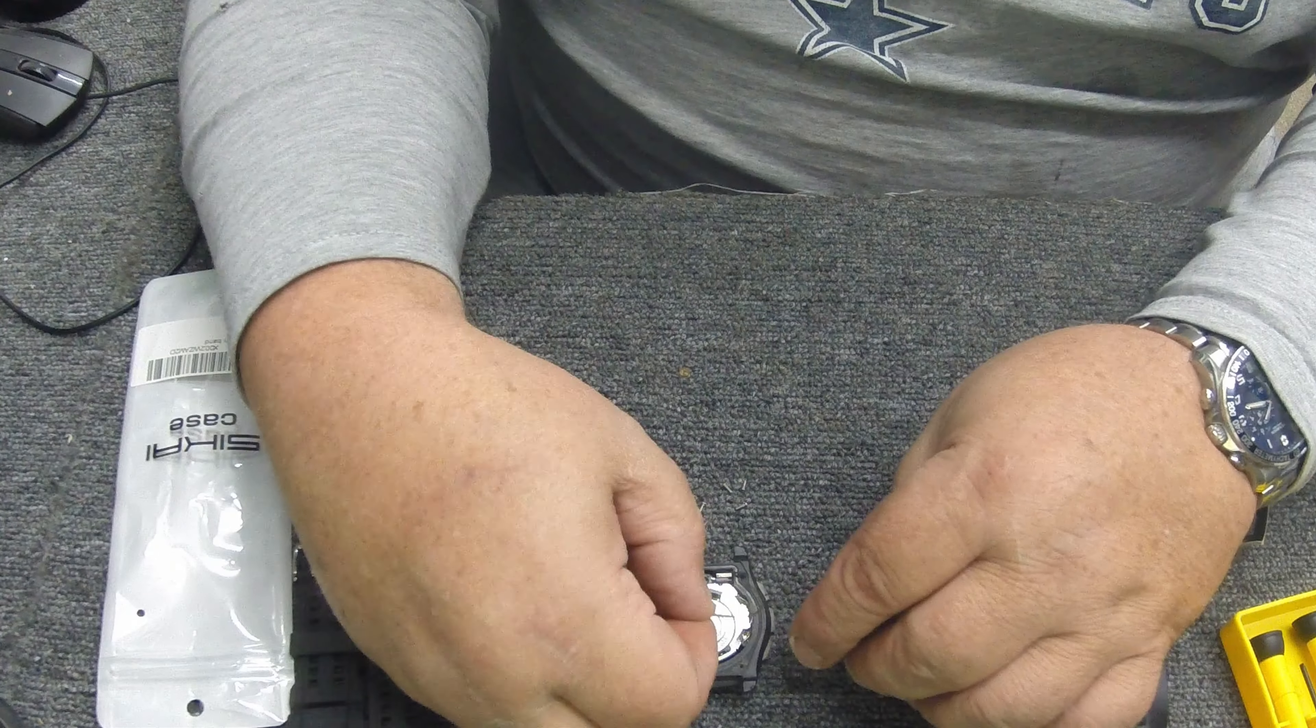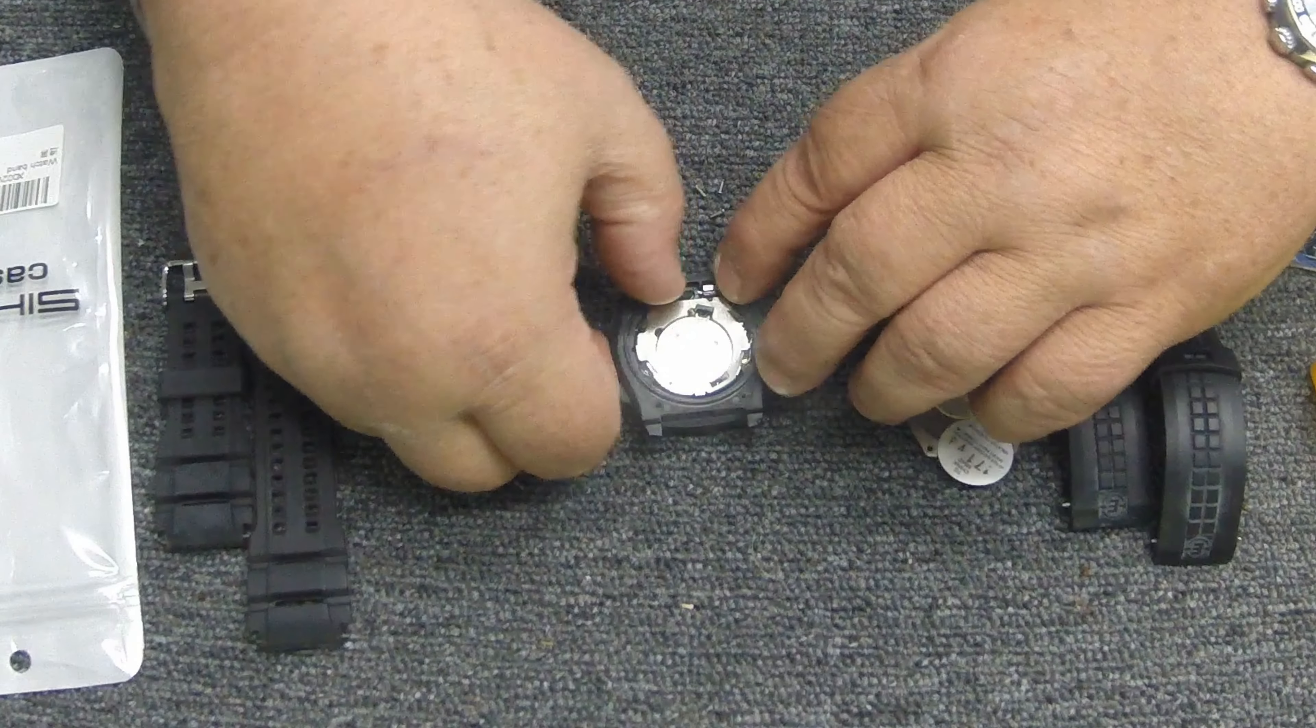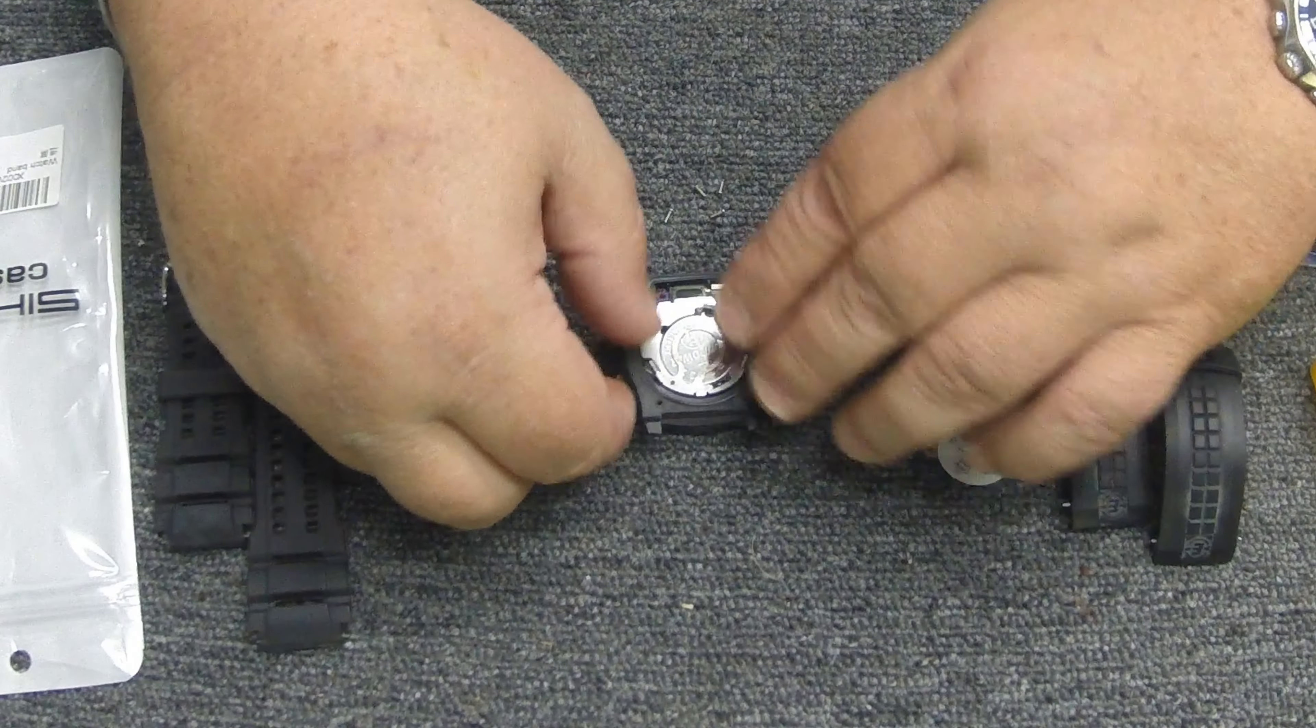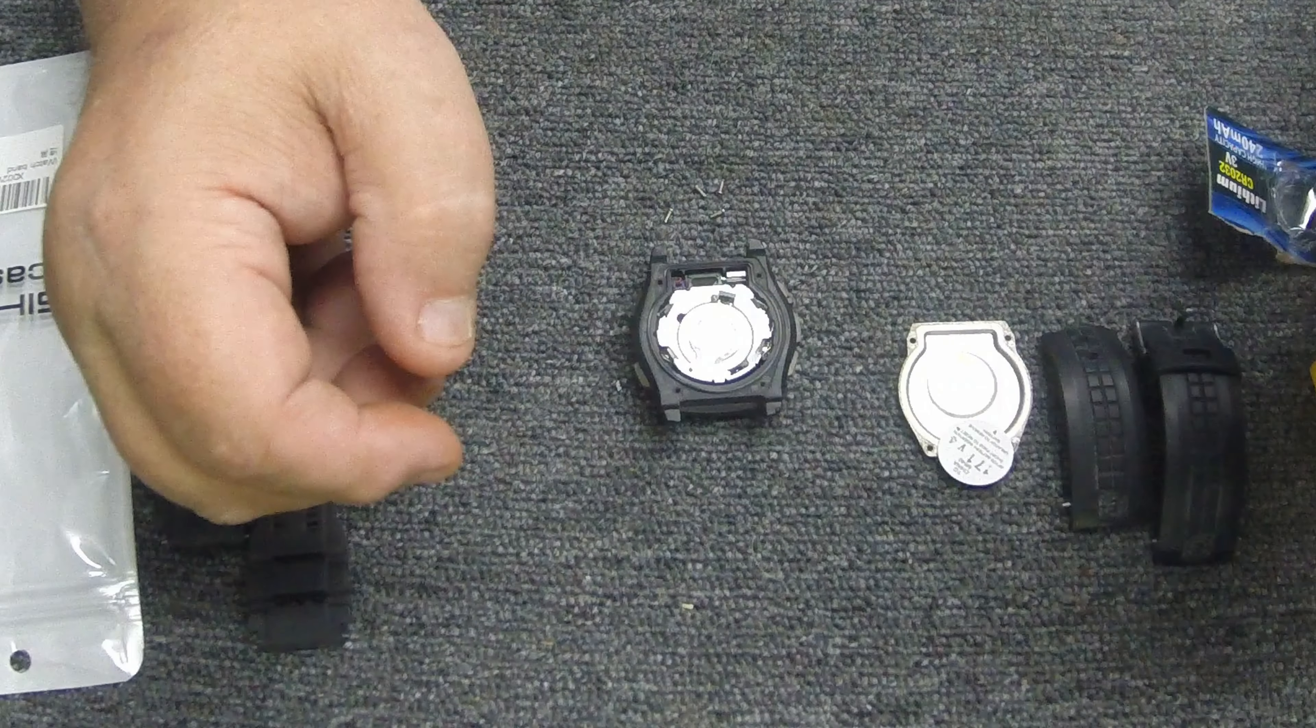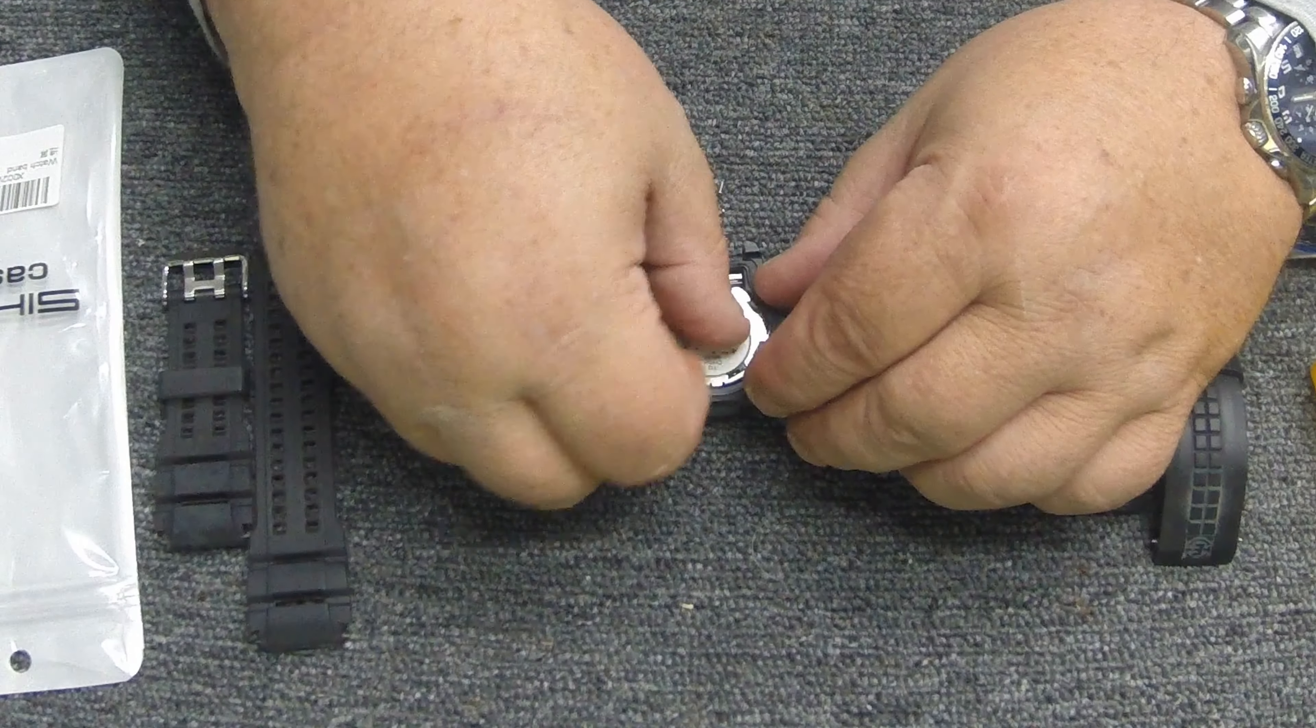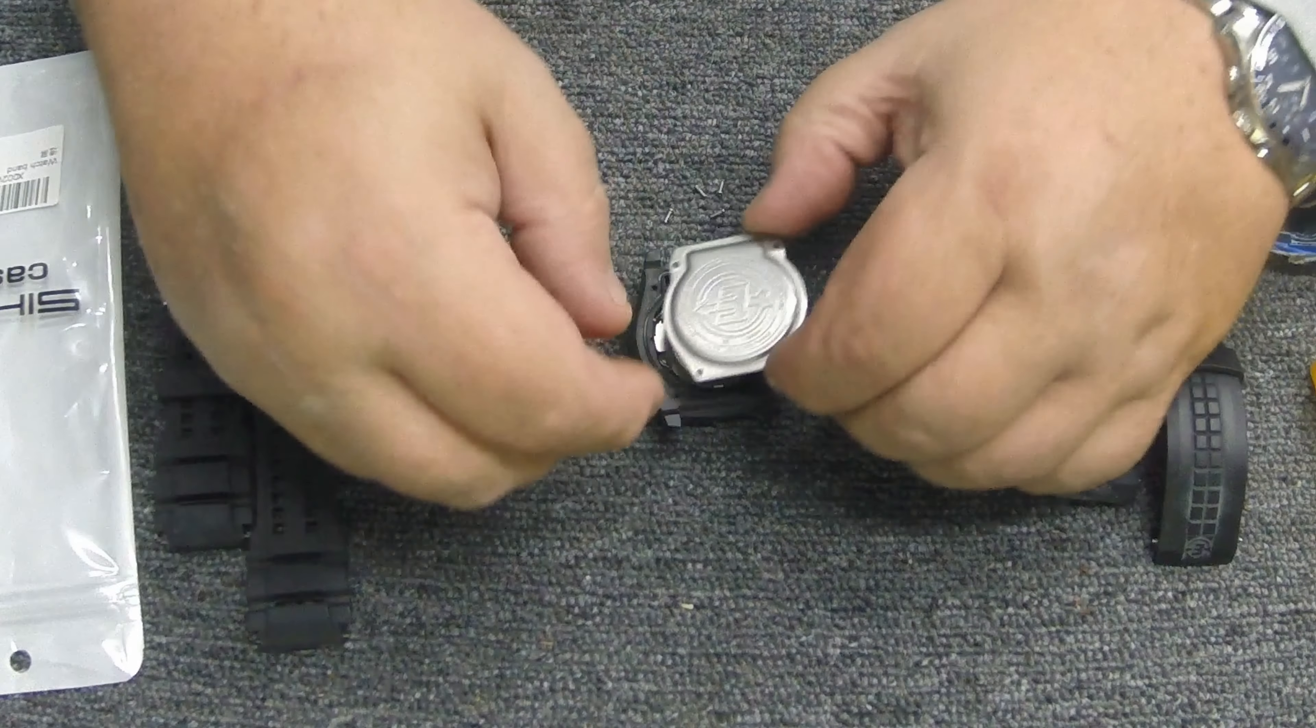Let's go ahead and set the gasket back in here. Real important to get that in the little grooves that fits in. You want to get this gasket in here nice and neat, you want it in the little groove that it fits in. Without that gasket it won't be waterproof, so you definitely want to make sure and get it seated in there the best you can. Looks pretty good there. And we'll go ahead and put the sticker back on there and put the back back on there.